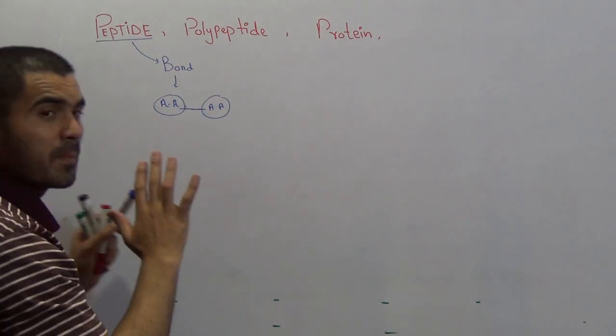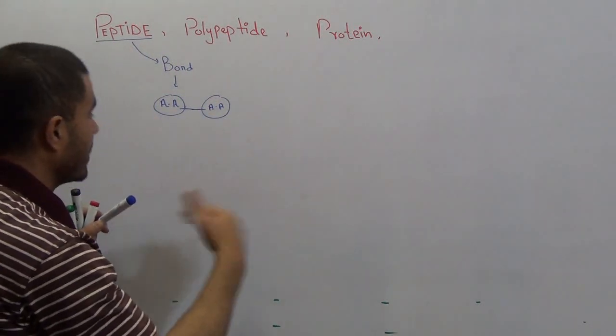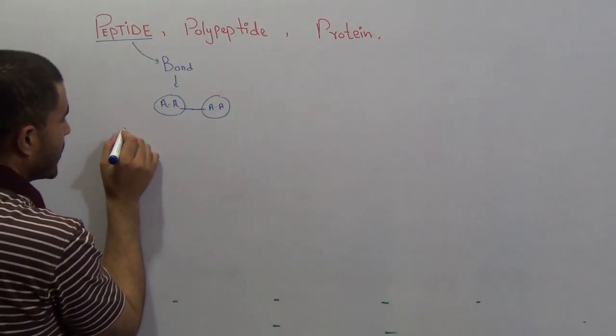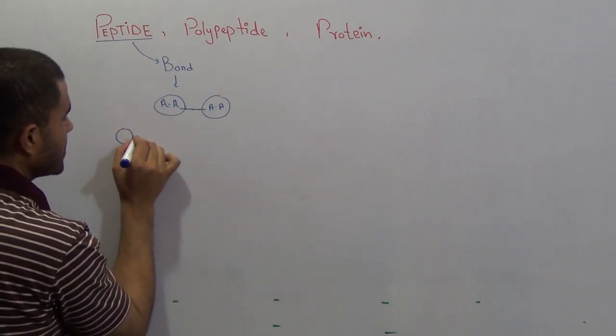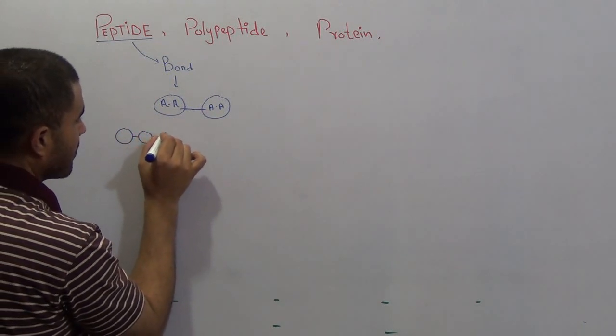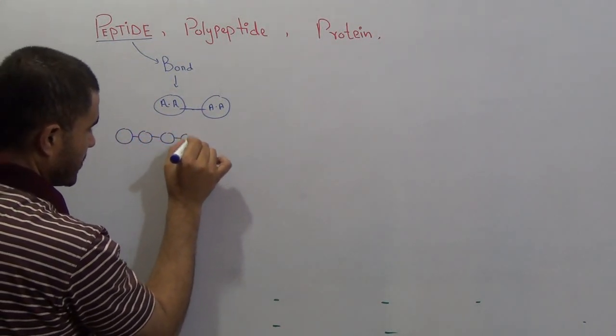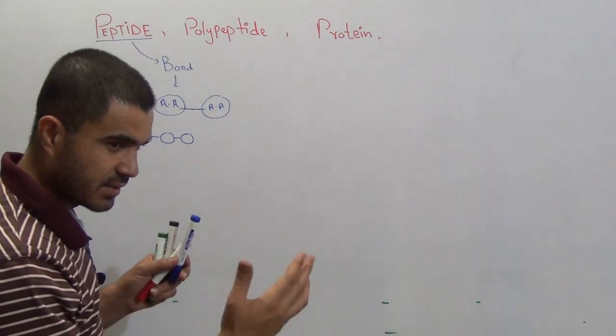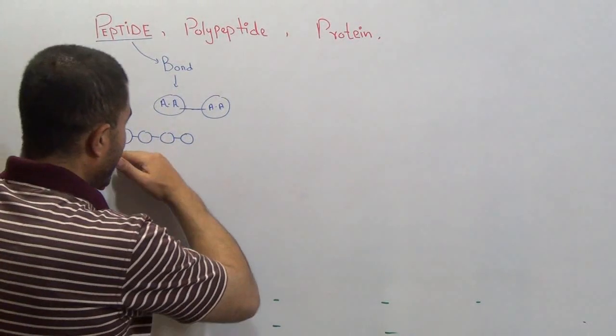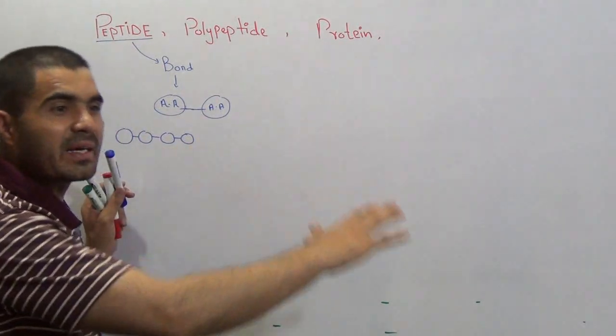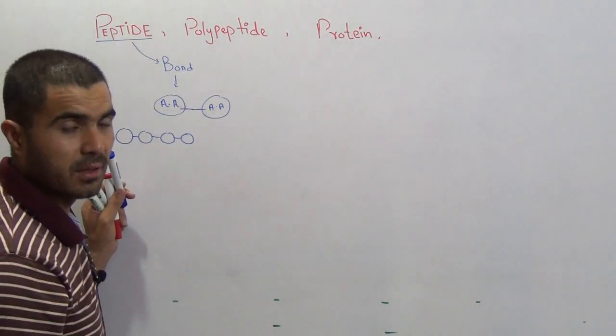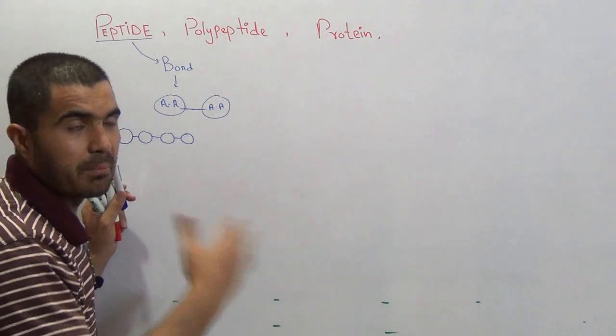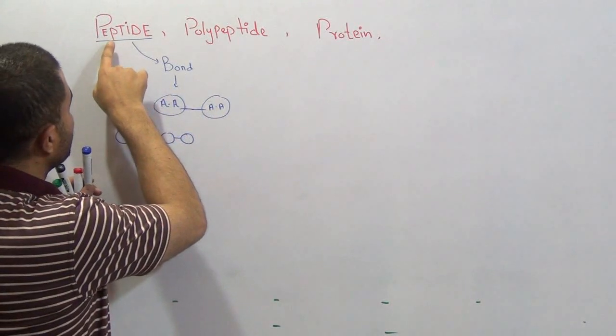So peptide if you link it with bond, then the meaning of peptide is this one. Now in the other way, how we can study that peptide? A peptide can also be referred to as when many amino acids - two, three, four, five, six, seven, eight, nineteen - are attached, linked, that polymer will also be called as peptide.